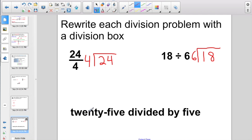And, our last one here, 25 divided by 5. So, 25 is my dividend, the number I'm dividing, so he's going inside the box. 5 is my divisor, the number I'm dividing by, he goes outside the box. 24 divided by 4, 18 divided by 6, 25 divided by 5.